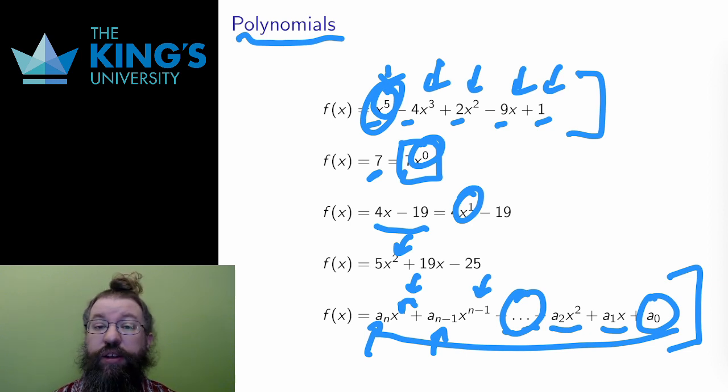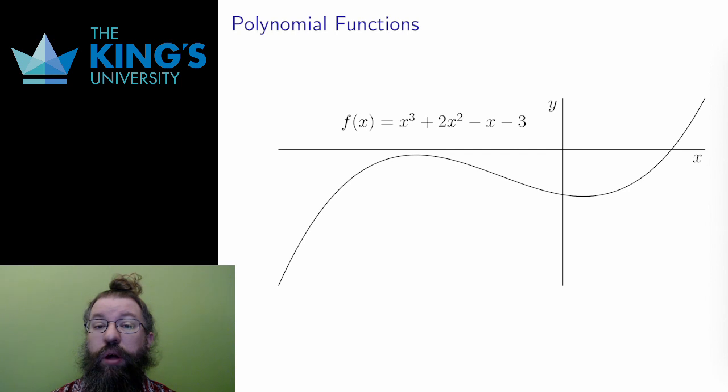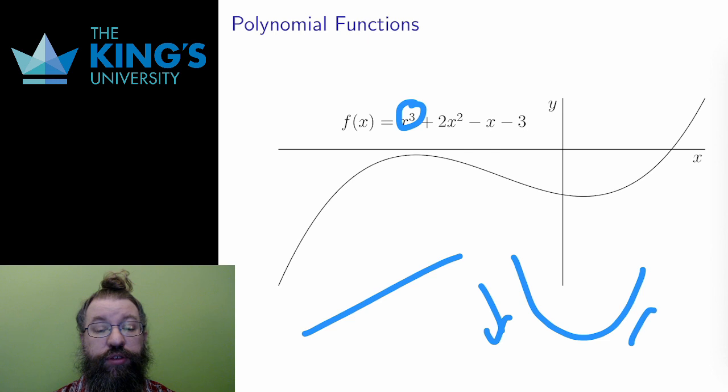Now, let's get back to the graph. For any polynomial, f of x equals the polynomial is a function. These are polynomial functions. They all have graphs. What I've drawn here is a degree 3 polynomial, a cubic. I can start to notice a pattern. A linear function was a straight line, a quadratic had one change in direction, and this cubic has two changes in direction.